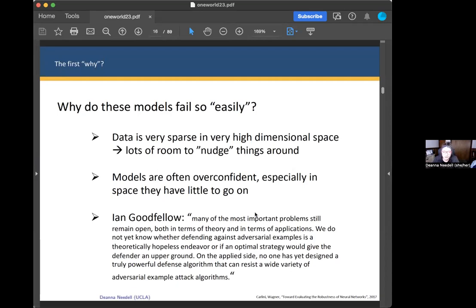In addition, models are often very over-confident, especially given this observation that they're seeing a very small piece of the space, and yet they have so much confidence in making predictions. And I really like this quote from Ian Goodfellow. He said, many of the most important problems still remain open, both in terms of theory and in terms of applications. We do not yet know whether defending against adversarial examples is a theoretically helpless endeavor, or if an optimal strategy would give the defender an upper ground. On the applied side, no one has yet designed a truly powerful defense algorithm that can resist a wide variety of adversarial example attack algorithms.